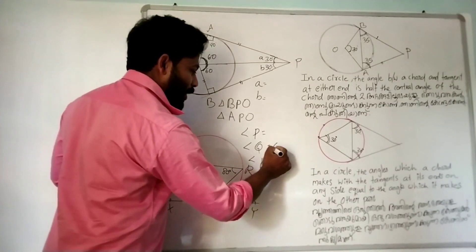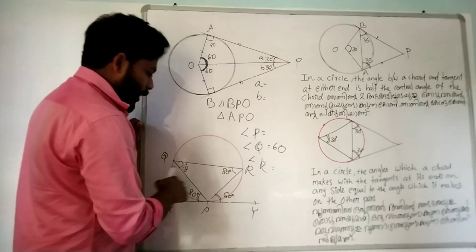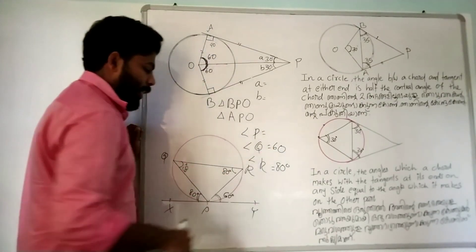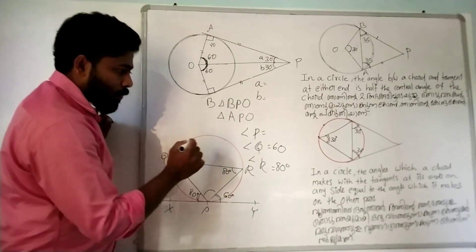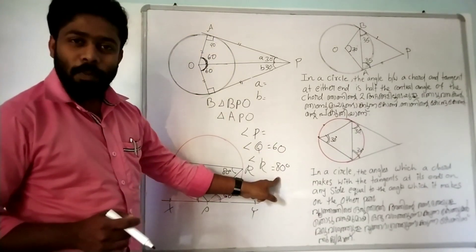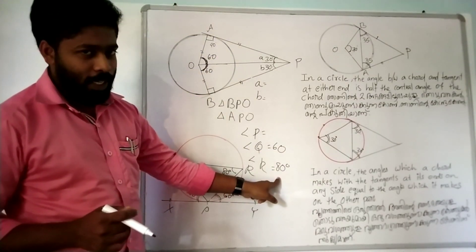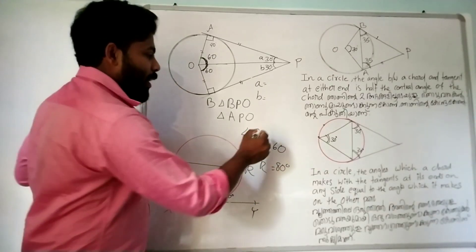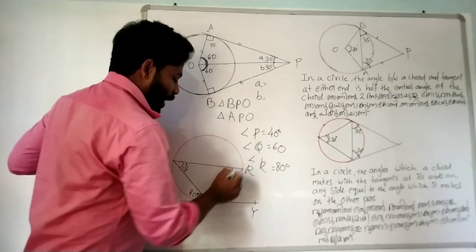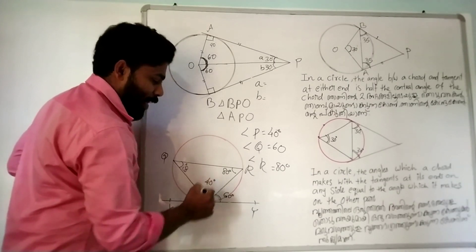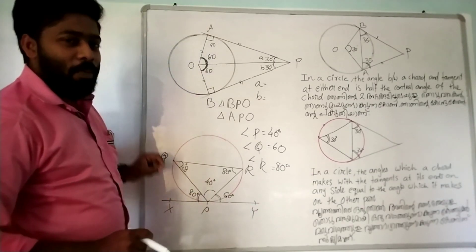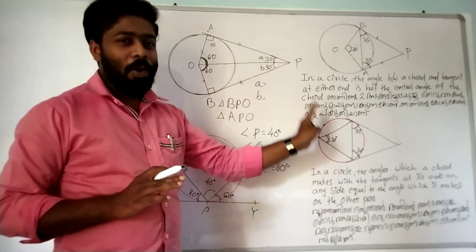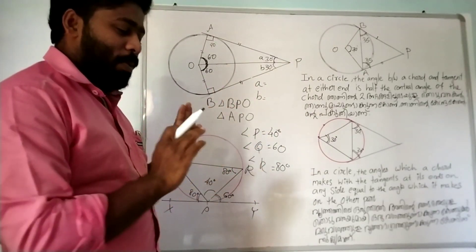Q is 60 degrees, P is 80 degrees. So the angle is 40 degrees and 80 degrees gives 40 degrees.